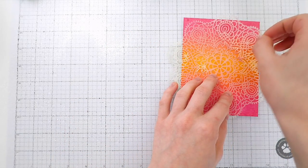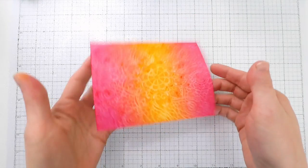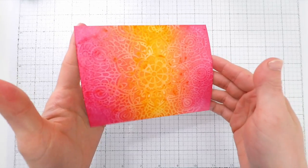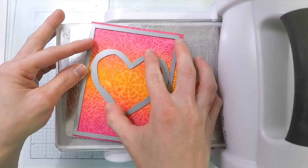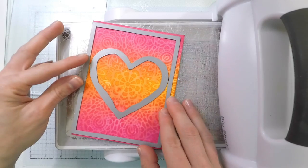After I removed the stencil, you can see we already have a ghost-like impression on the paper and it lifted off a lot of the color underneath. That created a really cool ghost-like impression and really makes your backgrounds and ink blending look fantastic.